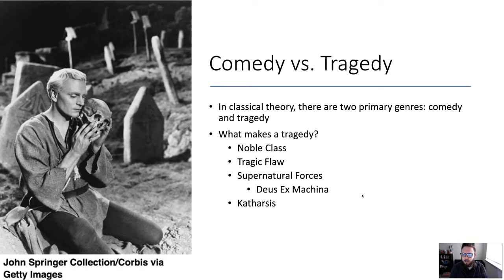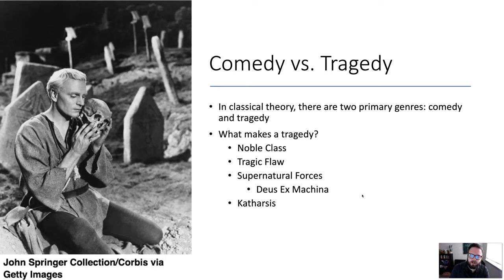In classical tragedy, the main character must also have a tragic flaw — something in their personality that pushes them toward their fall. Many say Hamlet's tragic flaw is his indecisiveness, his inability to act, causing him to wait until it's too late. In Oedipus the King, Oedipus's tragic flaw is hubris — he believes he can defy fate and prophecy.